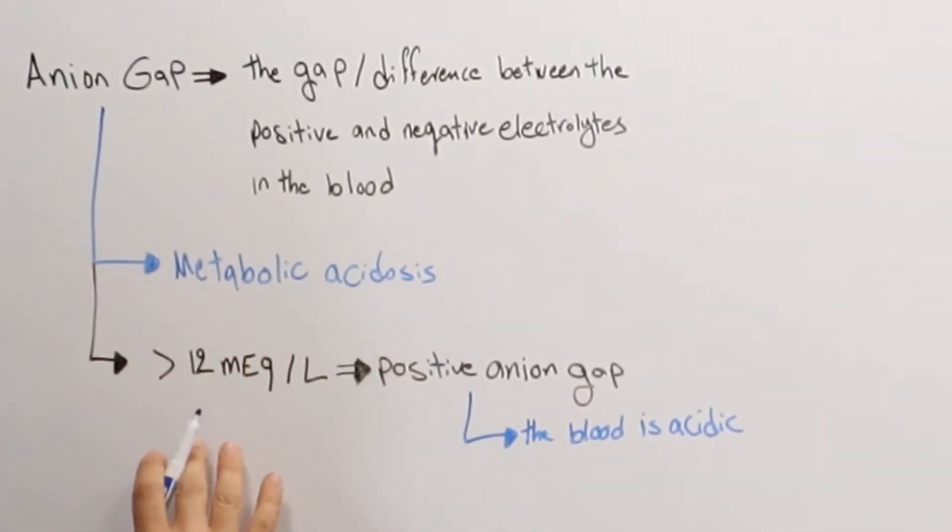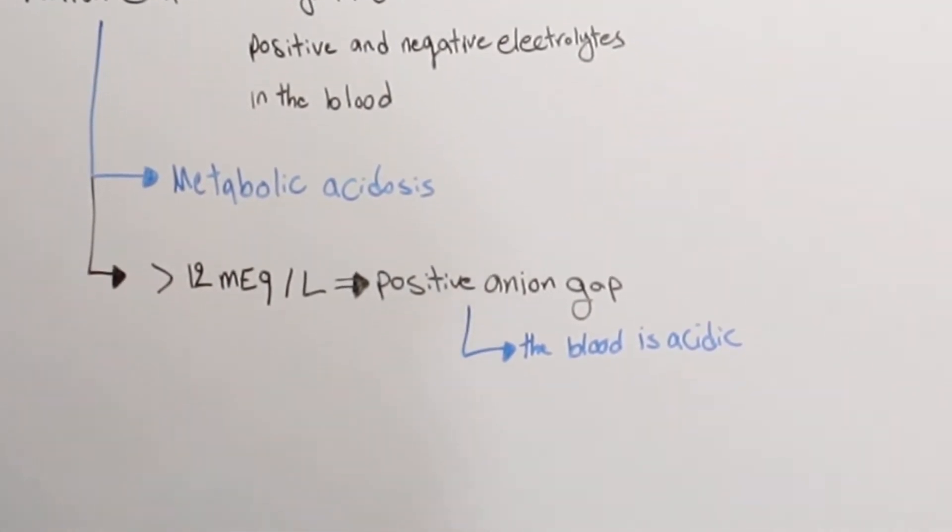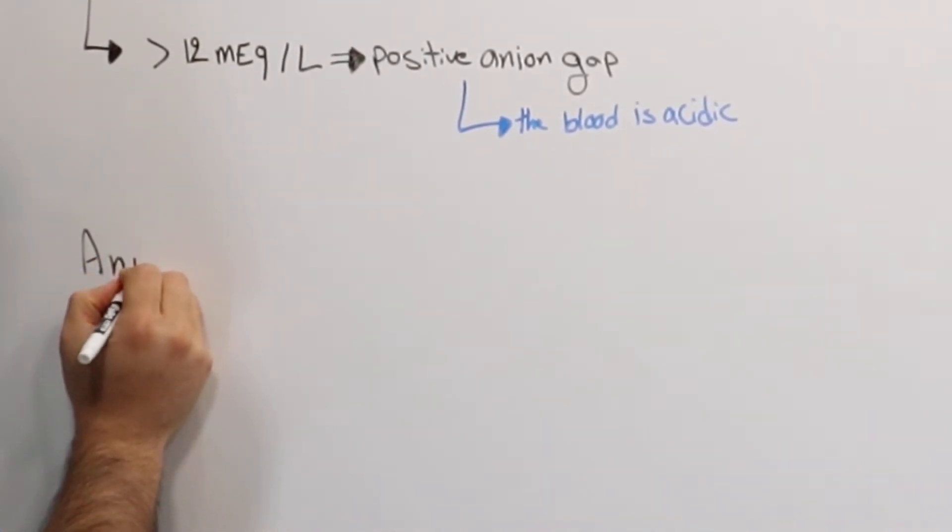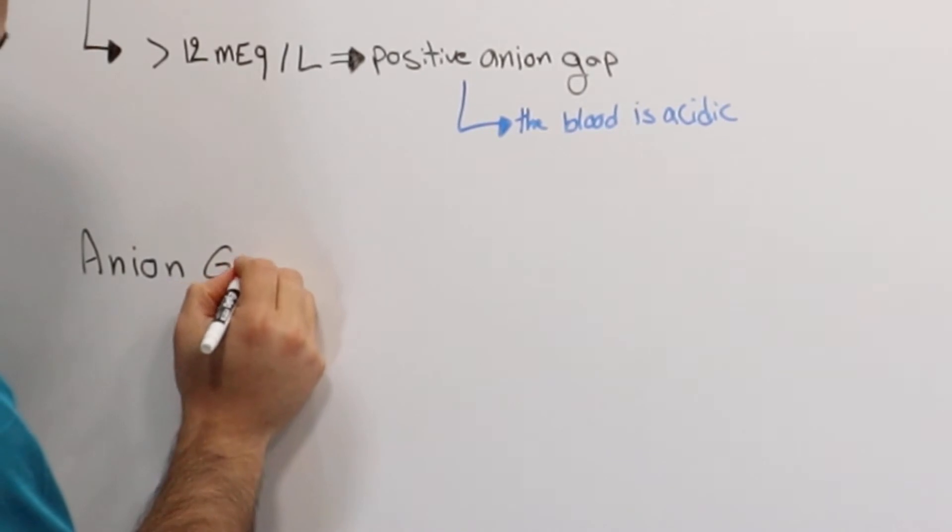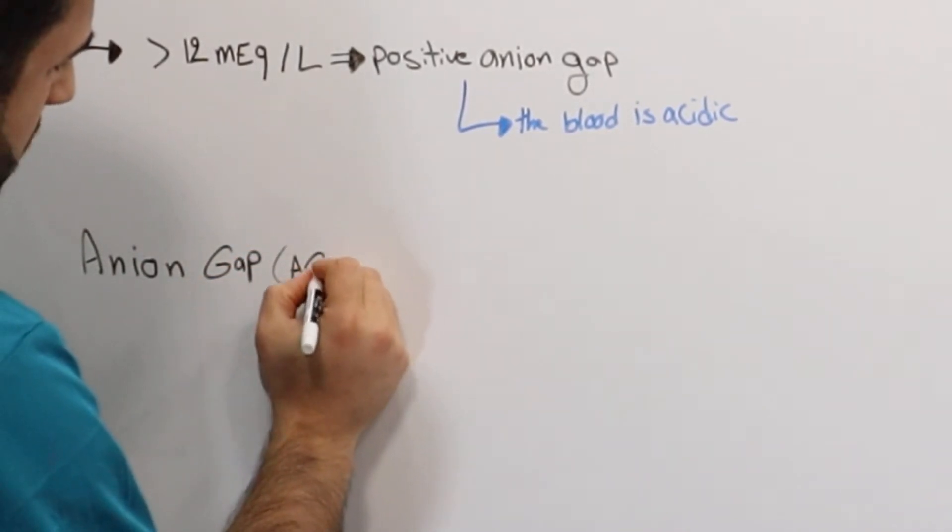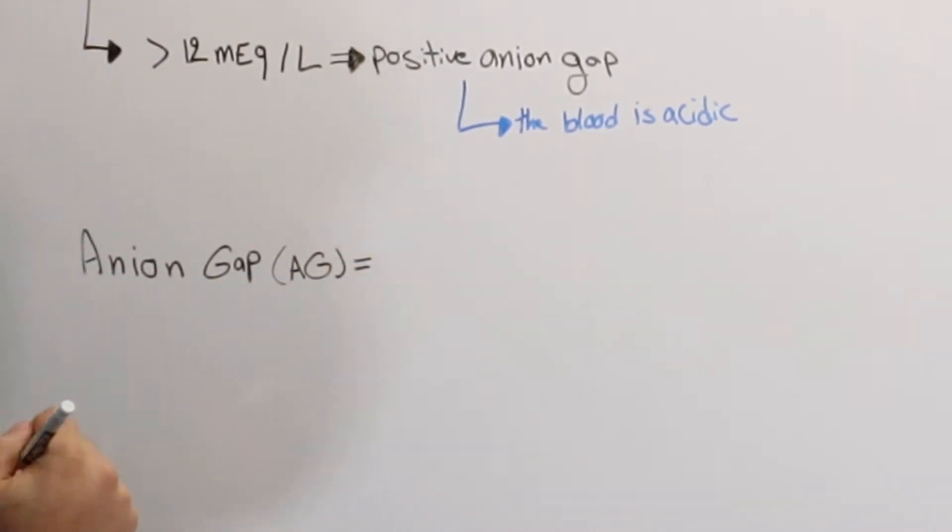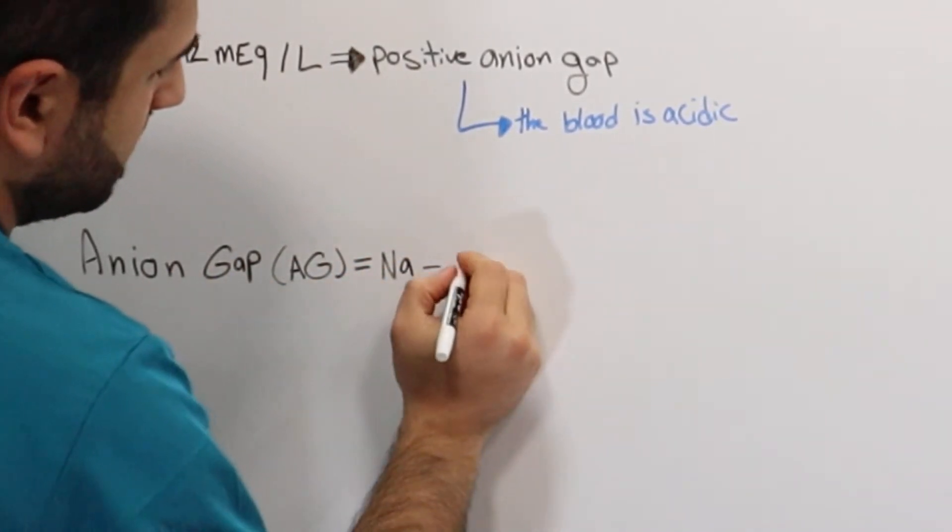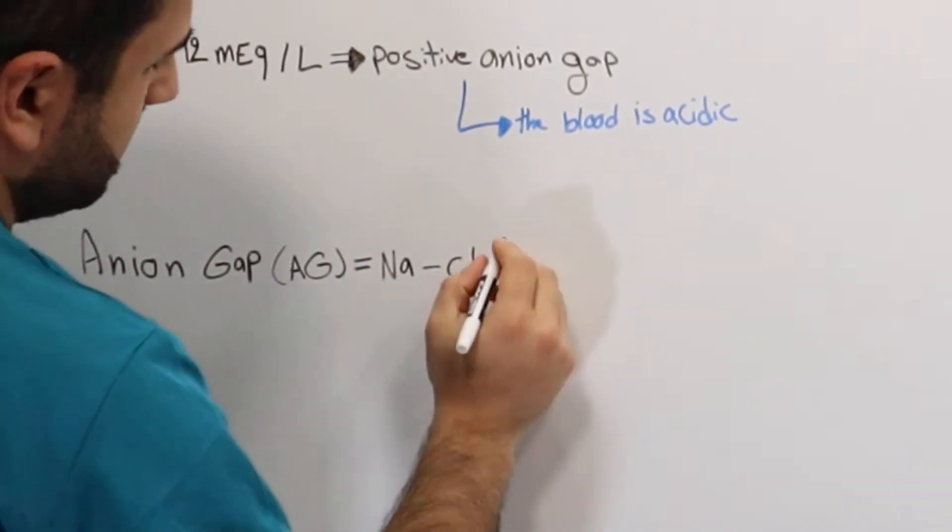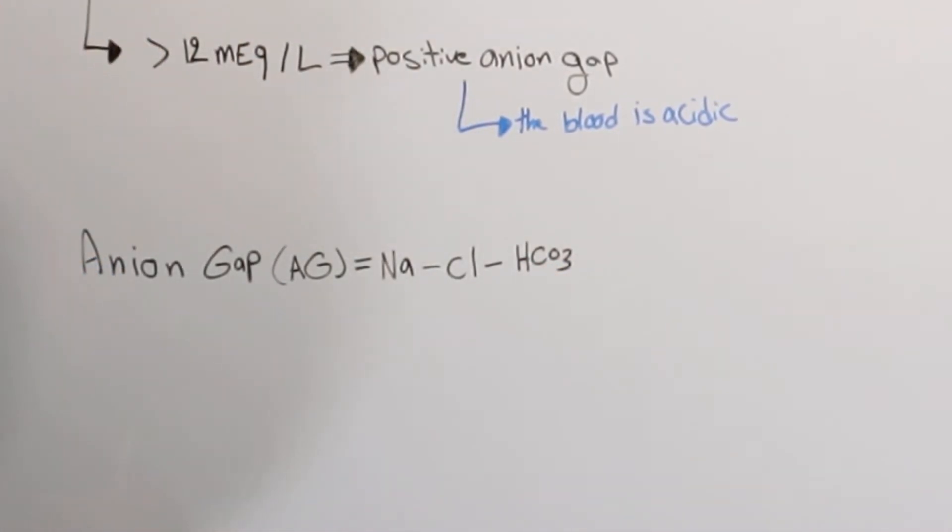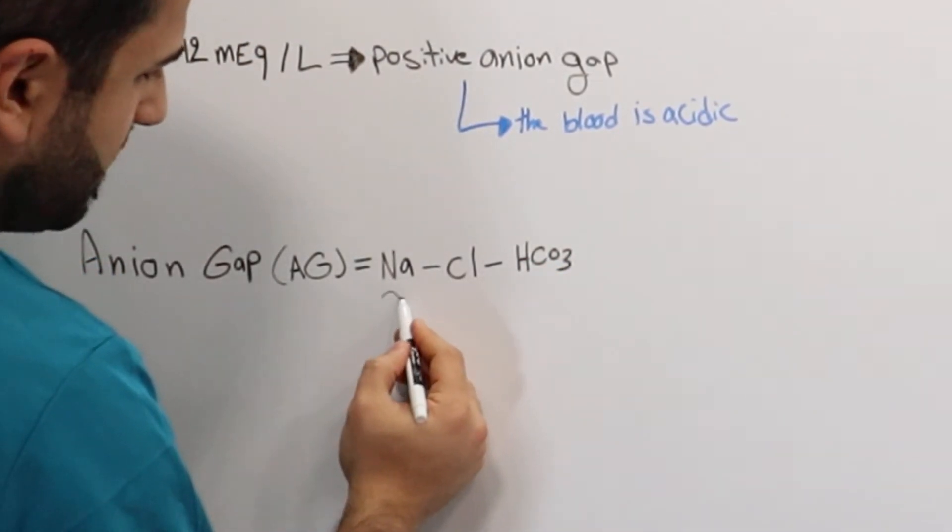So to calculate anion gap, basically there is a formula to follow, and that is anion gap, or shortness for AG, equals sodium minus chloride minus HCO3 or bicarbonate. So this is the formula.